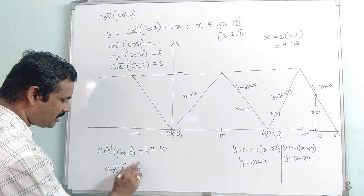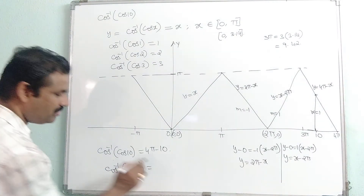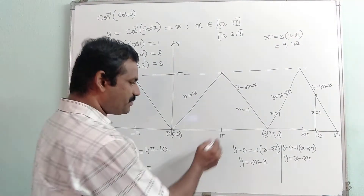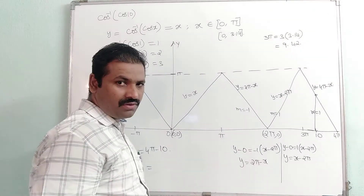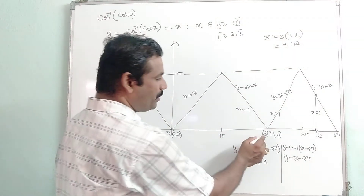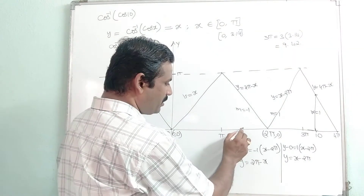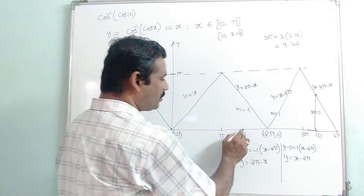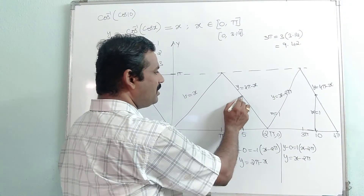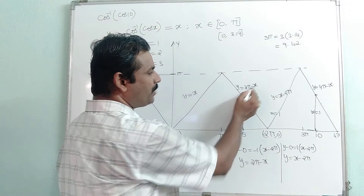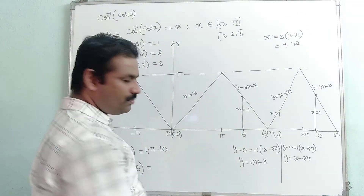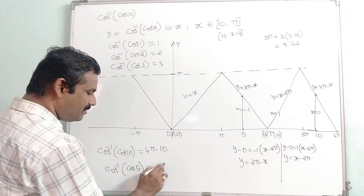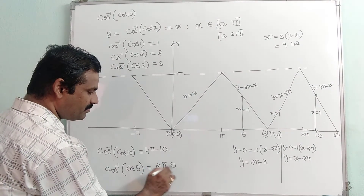Next, cos inverse of cos 5. We check where 5 lies. Pi is 3.14 and 2pi is 6.28, so 5 lies in the interval between pi and 2pi. In that interval the graph equation is y equal to 2pi minus x. Putting x equal to 5, cos inverse of cos 5 equals 2pi minus 5.